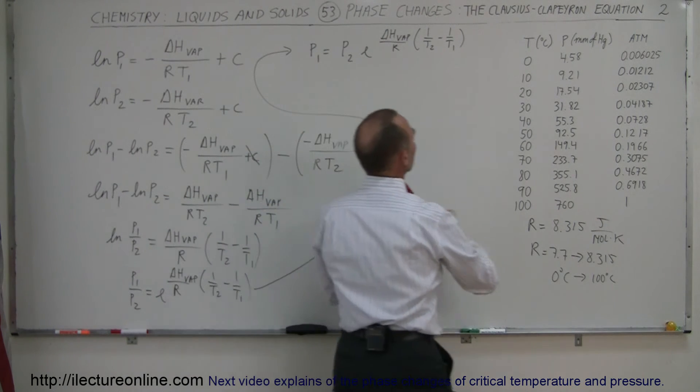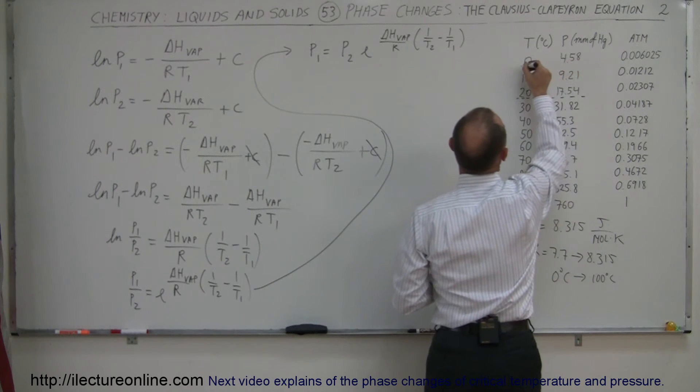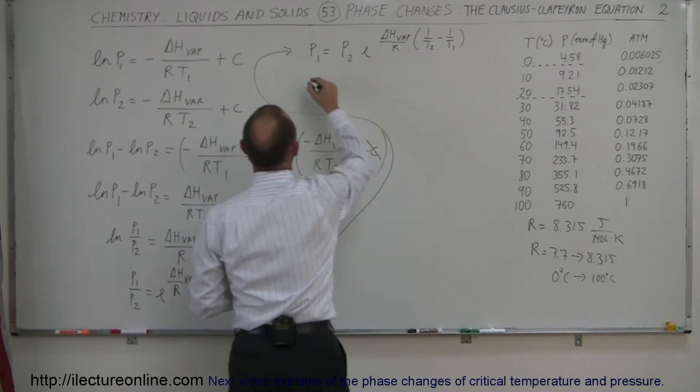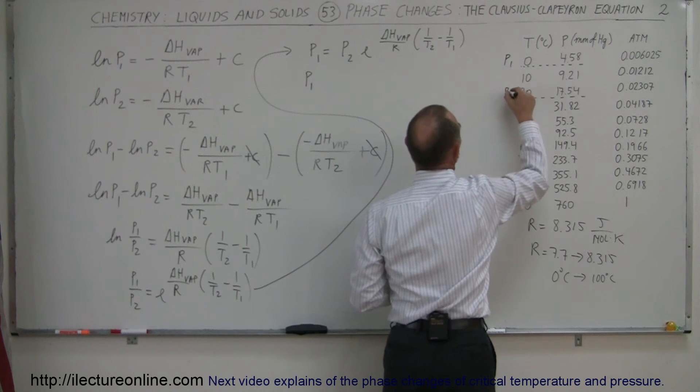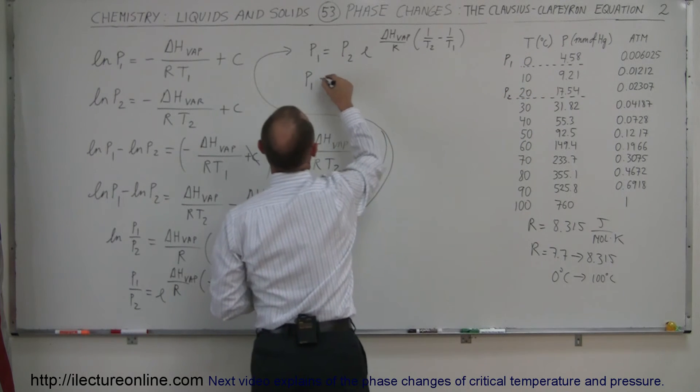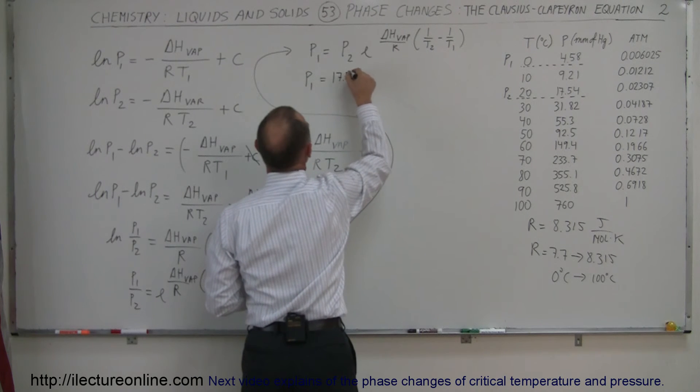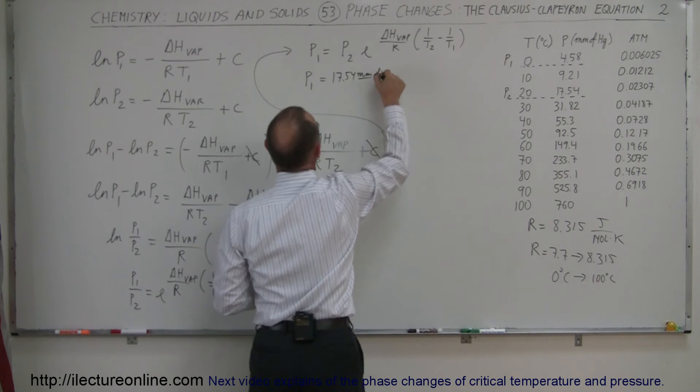Let's use a typical value, let's use 7.8 or something like that. Let's say we know the vapor pressure at 20 degrees, and we want to calculate the vapor pressure at 0 degrees. Let's throw it into the equation. Pressure 1 equals pressure 2, let's use 17.54 millimeters of mercury.